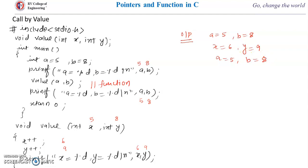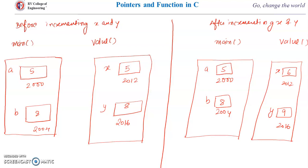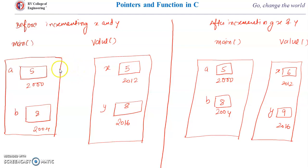The same thing is now explained using a diagram. Before incrementing x and y, and after incrementing x and y — this is what is happening. Before calling the function 'value', the value of a was 5 and b was 8. When any variable is declared, some memory is allocated to it. Suppose the address for a is 2000 and for b it is 2004. The values of a and b are copied into x and y when we call the function. So the copy of the values — 5 and 8 — is passed into x and y.